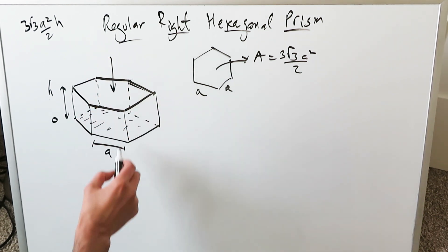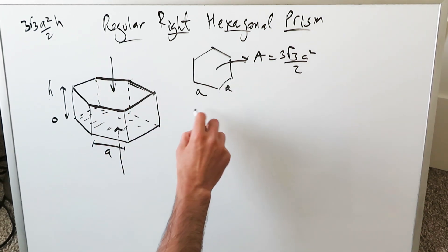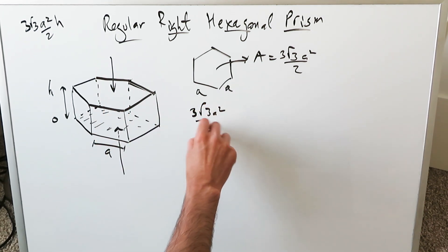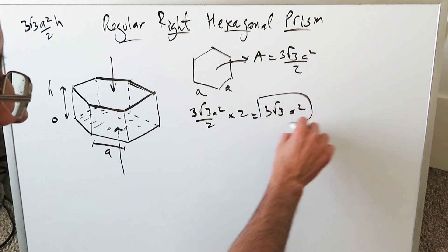Think about it. You have an upper face right here. You have a lower face right here. Each of these faces is that. You're doing 3 root 3 A square over 2 times 2, and you'll have 3 root 3 A square. That's the sum of the faces.